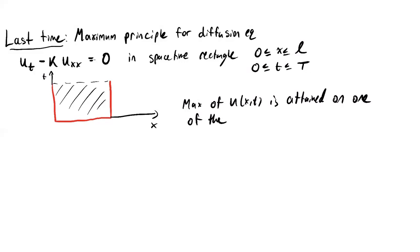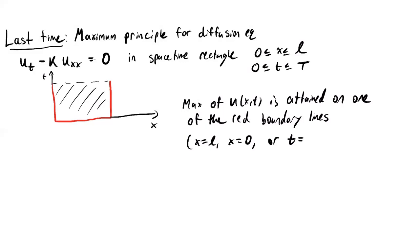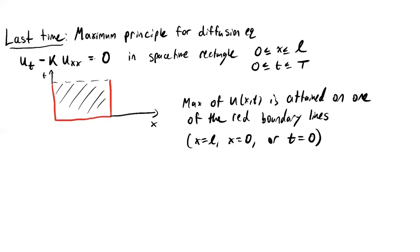There could potentially be other points where it's equally hot, but at least one of the points on the boundary will have the hottest temperature. The boundary lines are when x is equal to L, x is equal to zero, or time t is equal to zero. Think about a metal rod where the heat source is at one end. As time evolves, heat moves from left to right, and the heat source on the left is the hottest point, which is a boundary point.